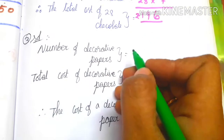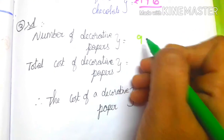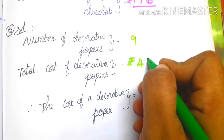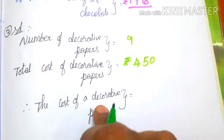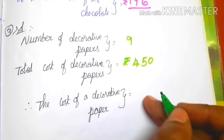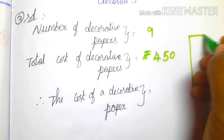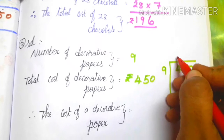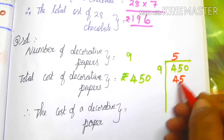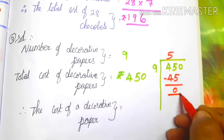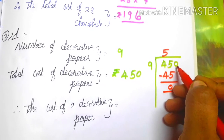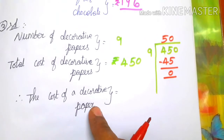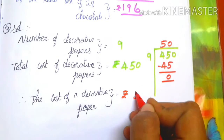Number of decorative papers is 9. Total cost of decorative papers is 450 rupees. So 450 divided by 9. 9 table: 5 nines are 45. Forty-five minus forty-five is zero, remainder zero. So the answer is 50. Therefore the cost of one decorative paper equals rupees 50.